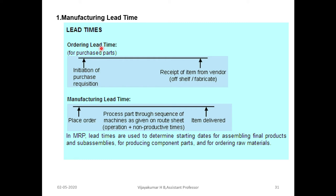Manufacturing lead time has two components: ordering lead time and manufacturing lead time. Ordering lead time is the time from when we place a purchase order for raw materials to the supplier until the supplier supplies the raw materials. Manufacturing lead time is the time from when the customer places the order to when we deliver the item to the customer.